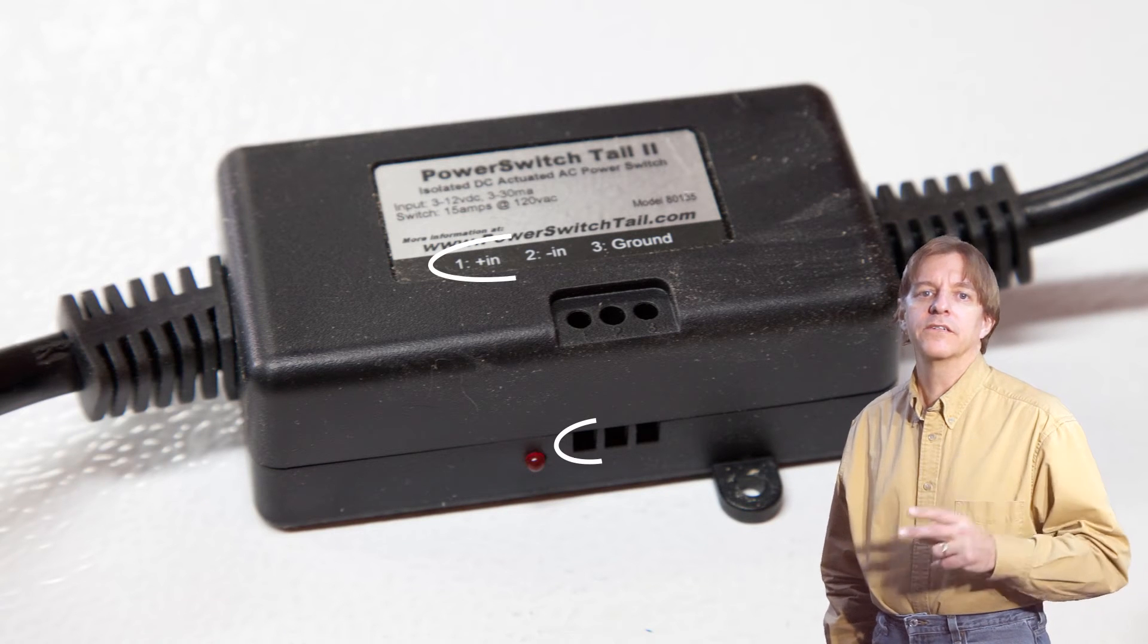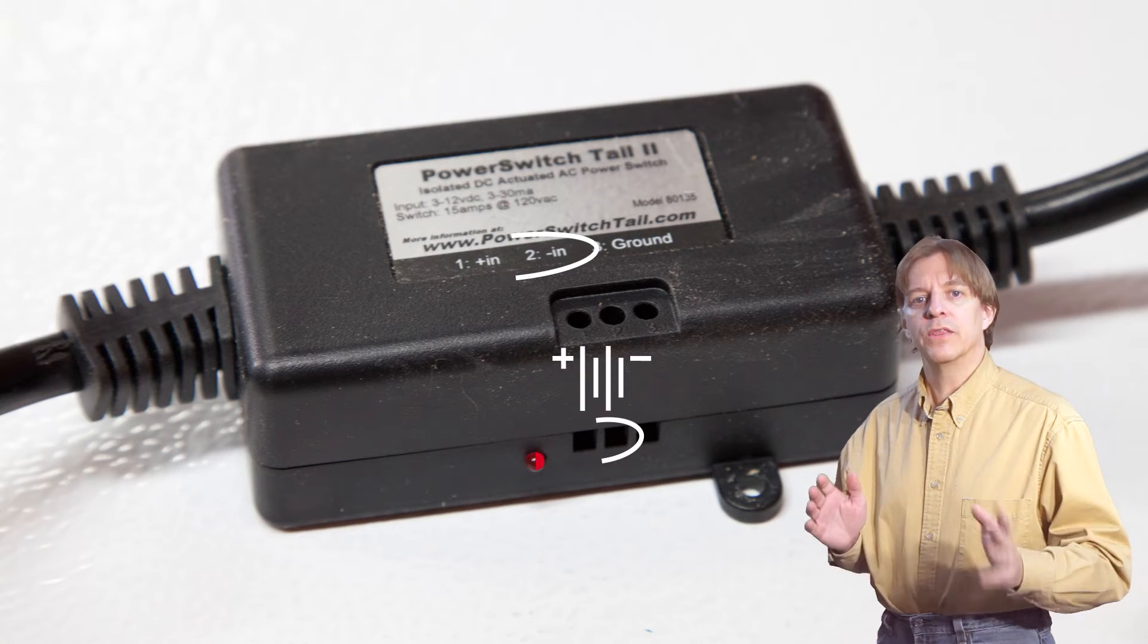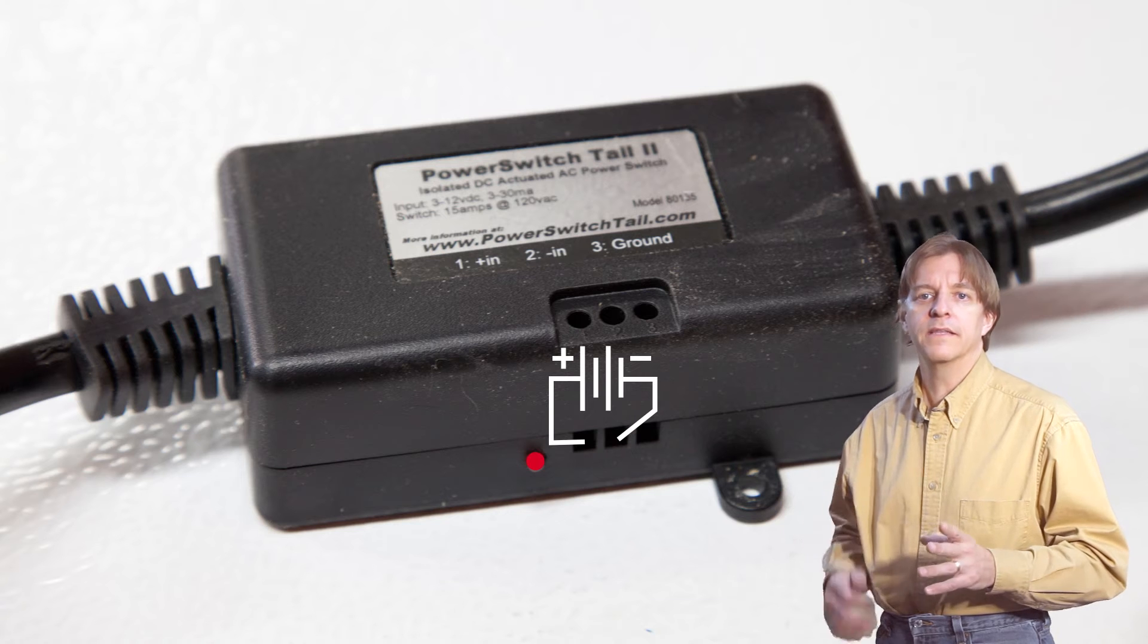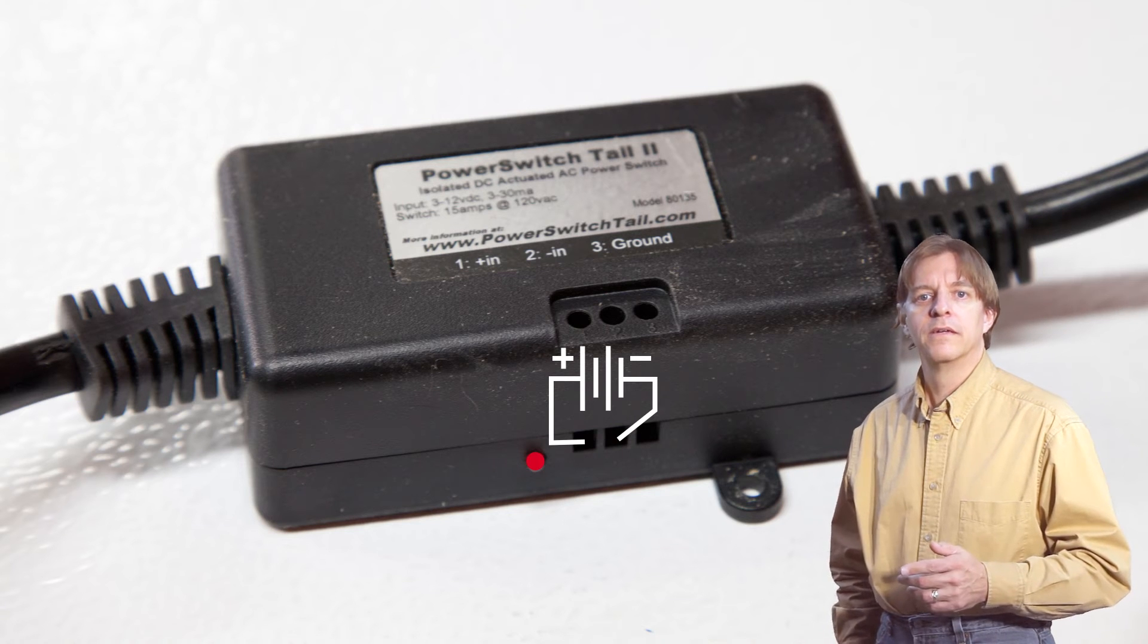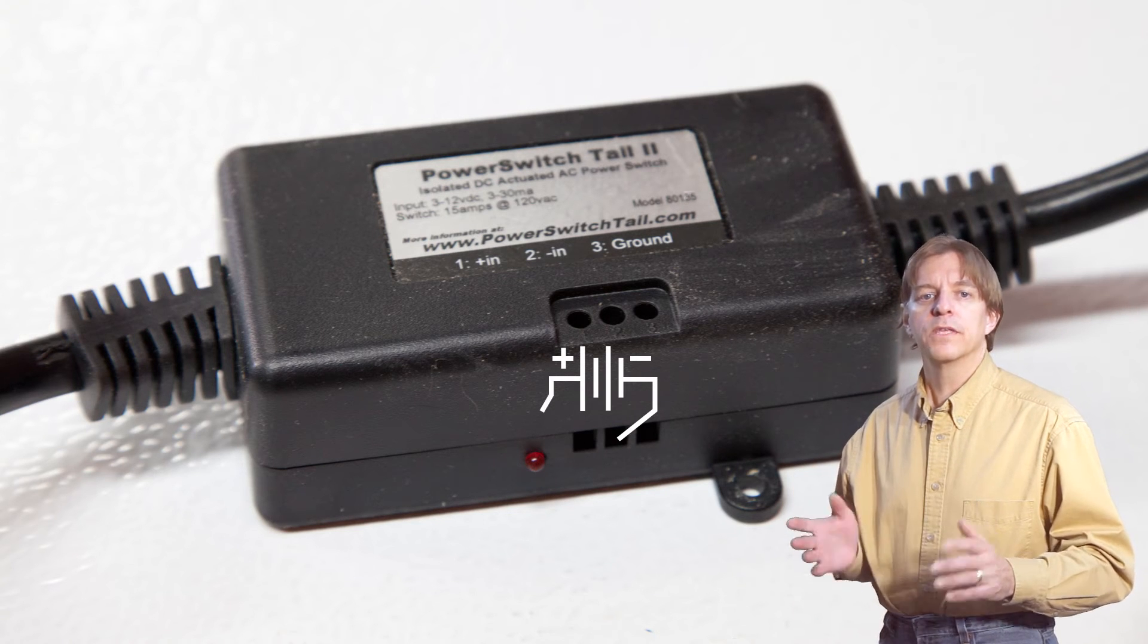On the side of this box are two connectors. When these connectors have between 3 and 12 volts DC applied to them, the main power is turned on. When there is no voltage on the connectors, the main power is turned off.